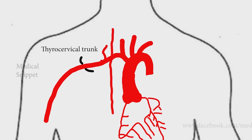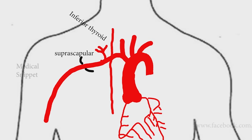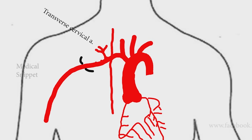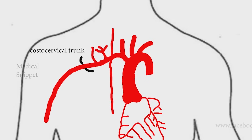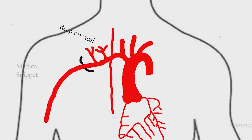The thyrocervical trunk gives off three branches: the suprascapular artery, the inferior thyroid artery, and the transverse cervical artery. The second part gives rise to the costocervical trunk, which splits into the superior intercostal and deep cervical artery. The third part gives rise to the dorsal scapular artery.